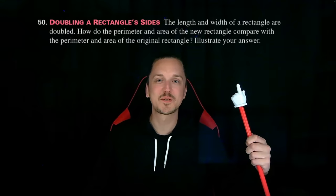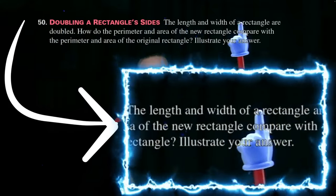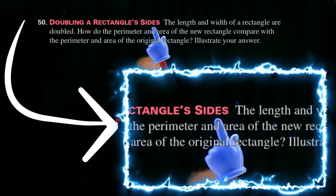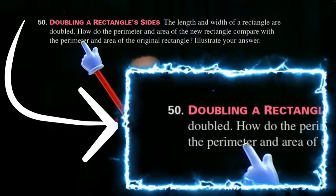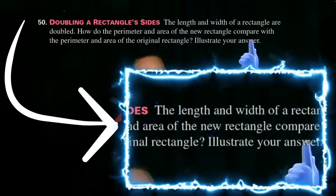First, let's read the problem's instructions. Doubling a rectangle's sides. The length and width of a rectangle are doubled. How do the perimeter and area of the new rectangle compare with the perimeter and area of the original rectangle? Illustrate your answer.